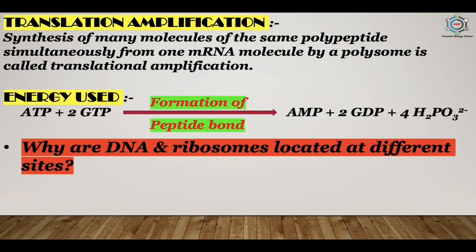The question is: why are DNA and ribosomes located at different sites? If both were in the nucleus, the manufacturing center would be far from the energy source and raw materials. If both were in the cytoplasm, the information center would be exposed to respiratory breakdown. The nuclear envelope preserves the stability of DNA by protecting it from respiratory destruction. Genes are thus permanent, authentic master documents from which working copies are prepared in the form of mRNAs.